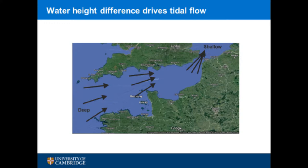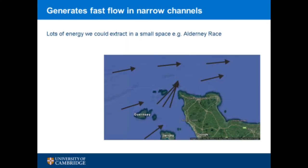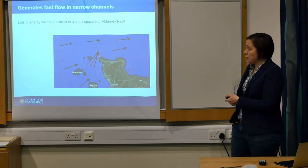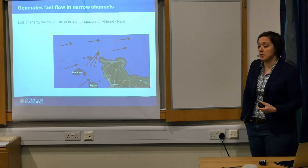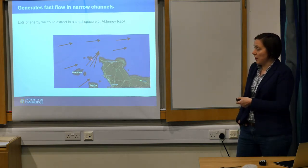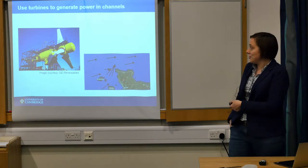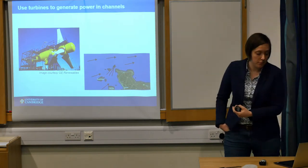Tides are driven by the moon and the sun, by the relative position of the moon, the earth and the sun. Basically you've got flow being forced from deep to shallow and then back again. When you zoom in to places like the Alderney Race in the Channel Islands and other locations around the UK and the English Channel, you get flow forced very fast through these narrow channels. In that place, you've got a lot of kinetic energy that you could extract using a turbine, and you can build something that looks a bit like a wind turbine but stumpier.